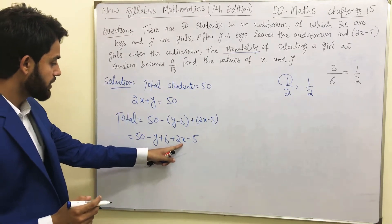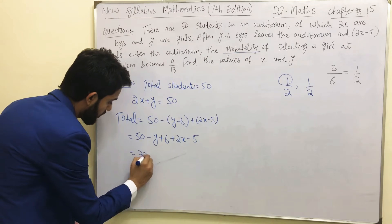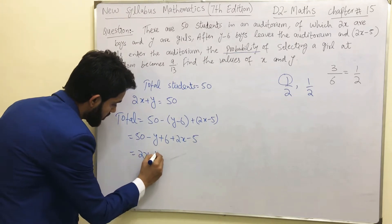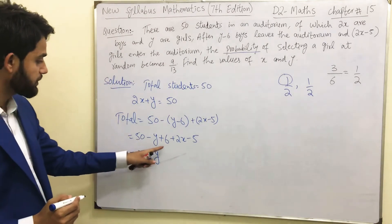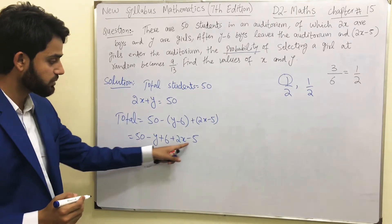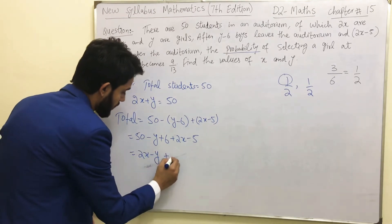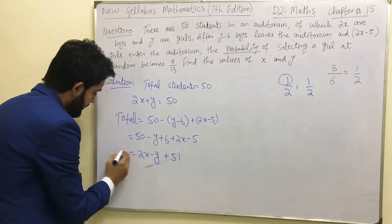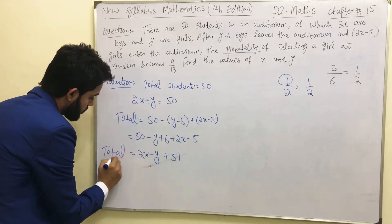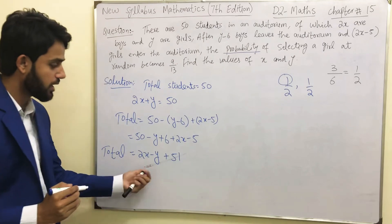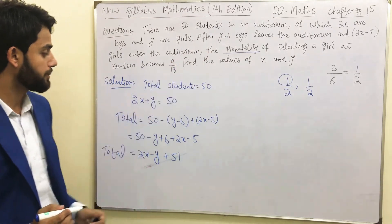Rearranging the expression, we get 2x minus y, and for the constants: 50 plus 6 equals 56, then 56 minus 5 equals 51. So the new total number of students after these changes is 2x minus y plus 51. That is the total after applying this condition.